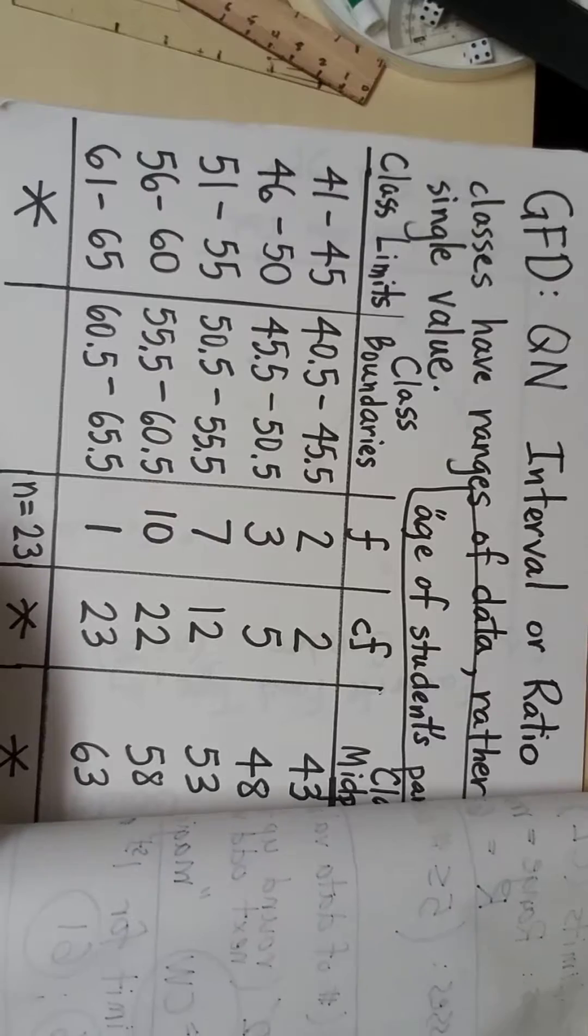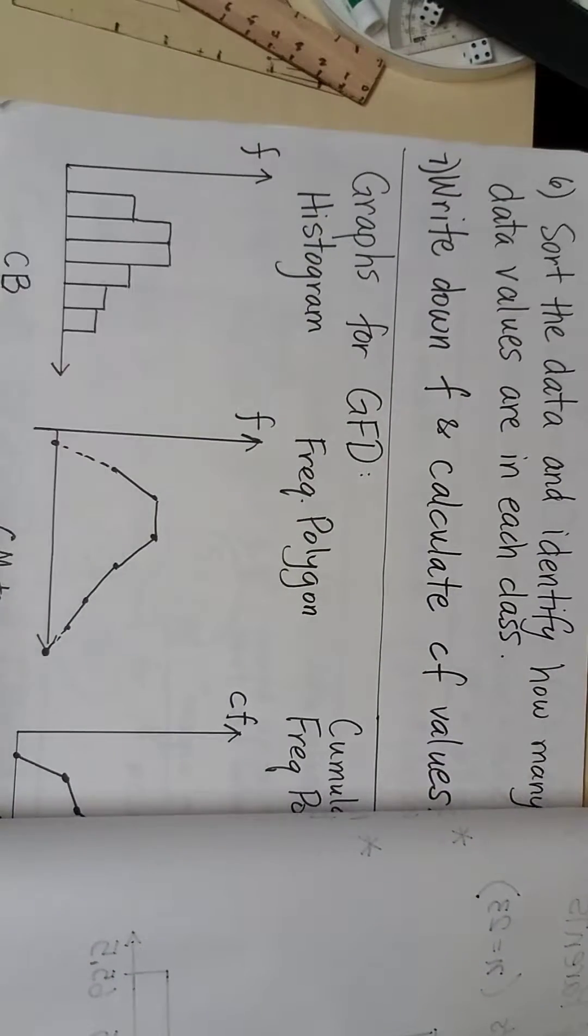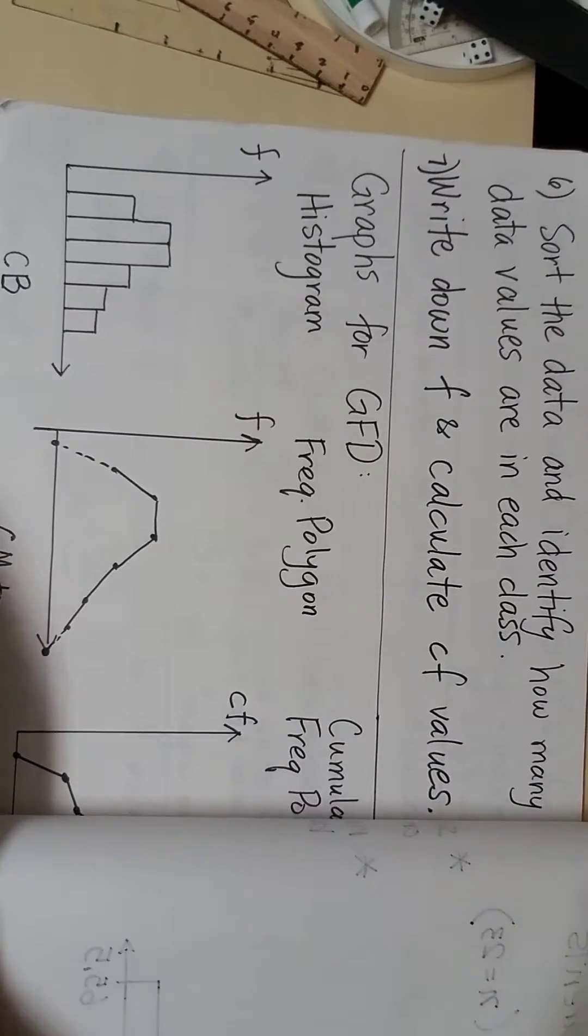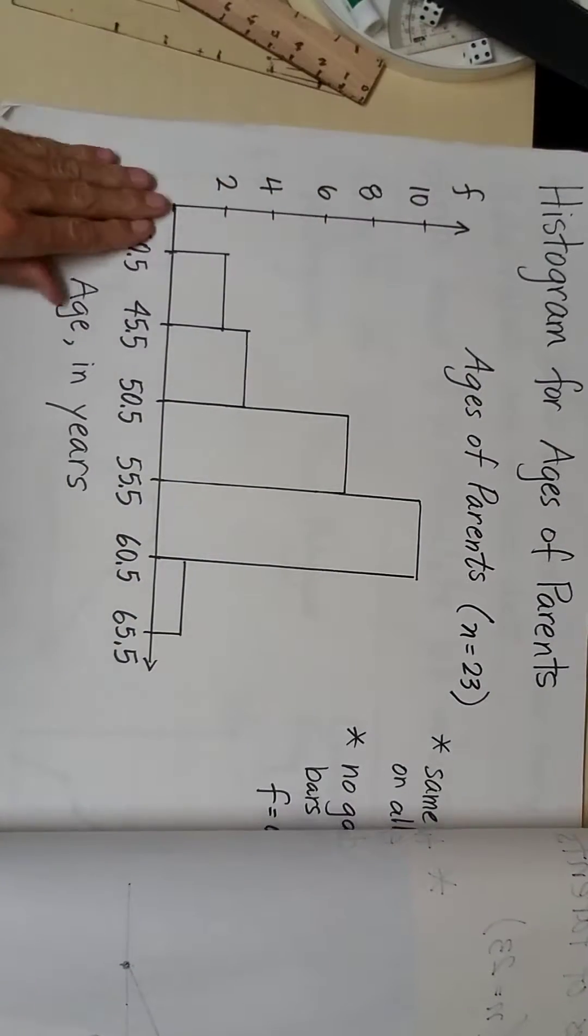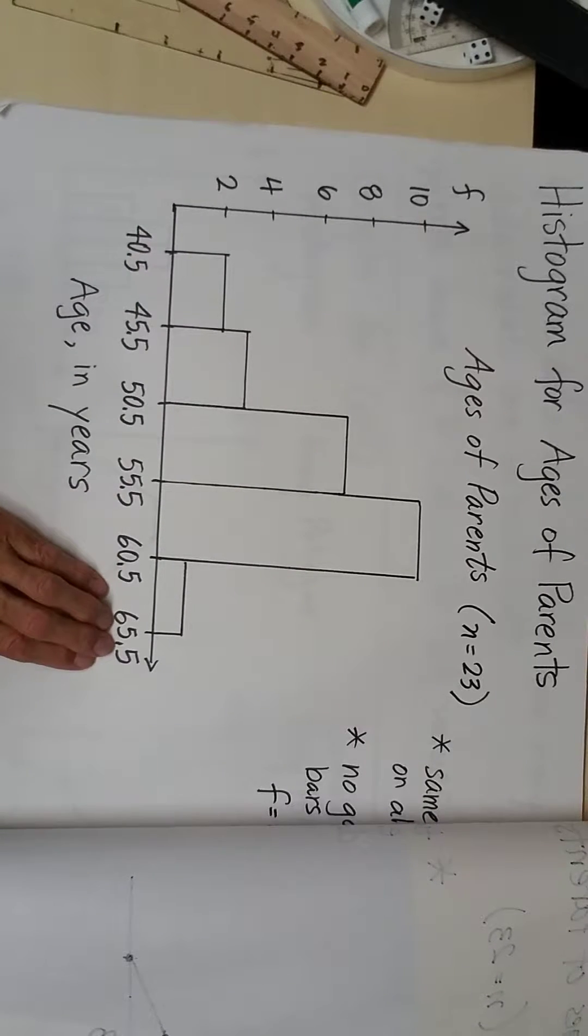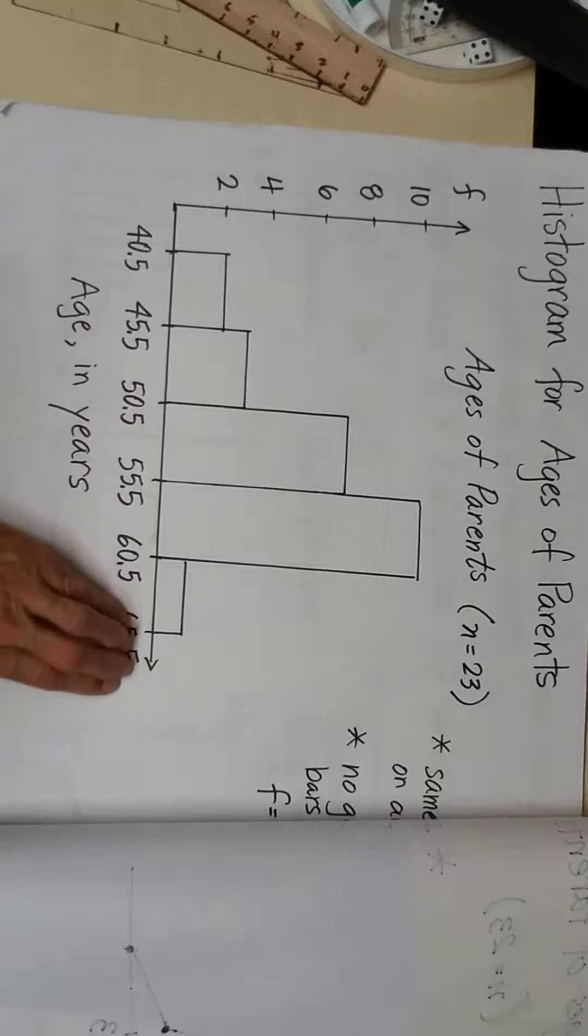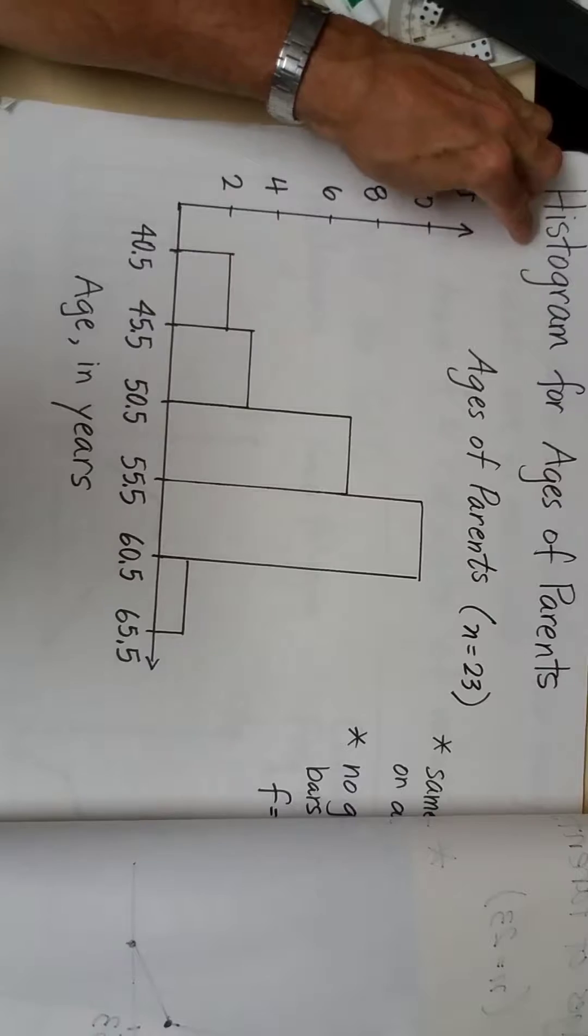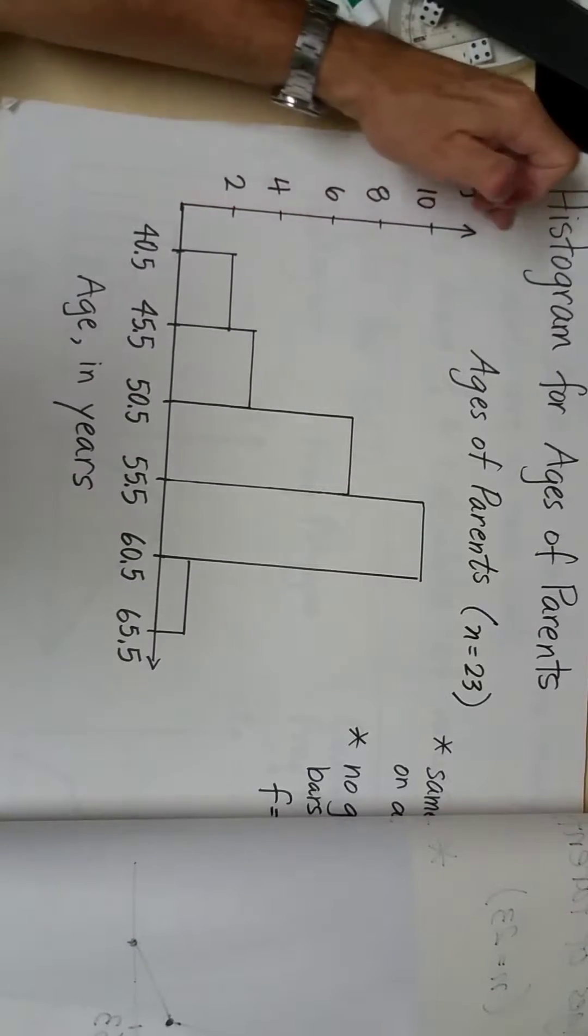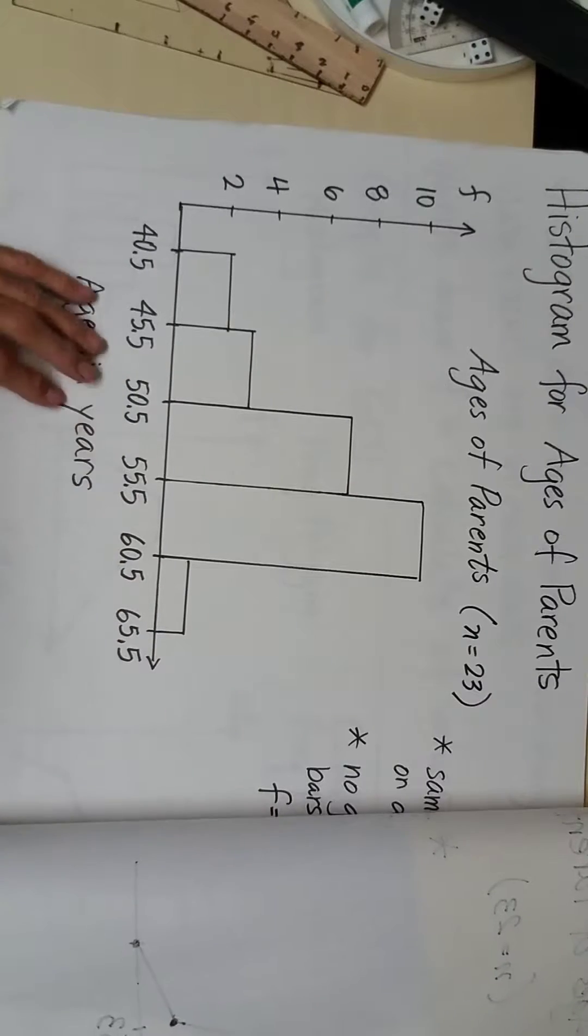If you remember the histogram, the histogram graph uses frequencies and class boundaries. So for this new graph, our lower axis is going to look like this, but our left-hand axis is going to be more exaggerated using cumulative values. And it's not going to be a bar graph, it will be a line graph.